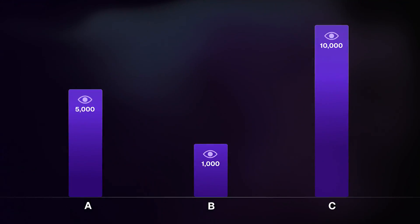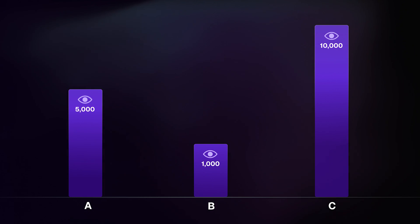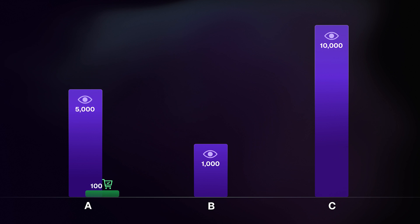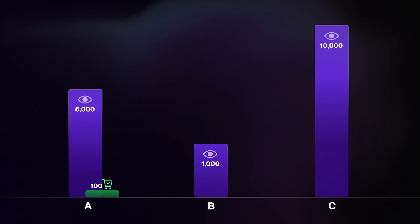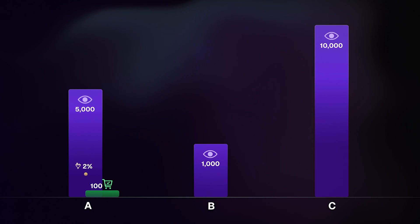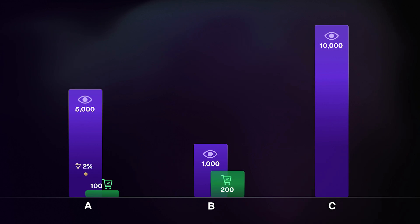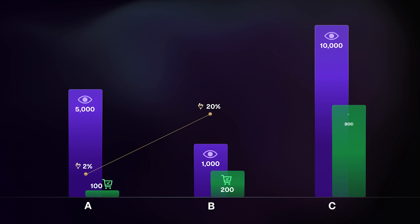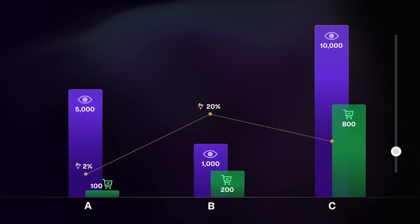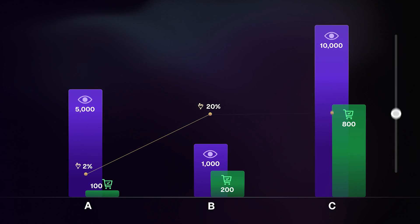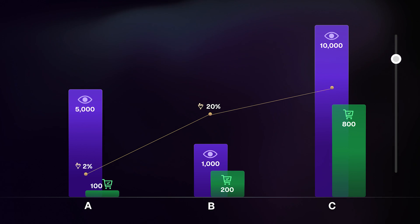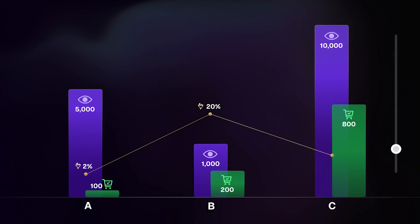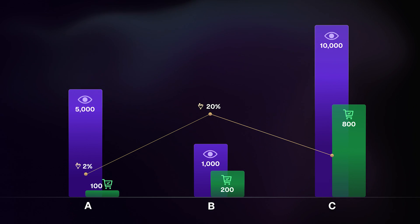For example, out of 5,000 people landing on product A, 100 made a purchase — that's a conversion rate of 2%. Product B received 1,000 visits and 200 people made a purchase — that's a conversion rate of 20%. Product C received 10,000 visits and 800 people made a purchase. I'll give you five seconds to work it out — and if you get it right without a calculator, you have permission to tell your old maths teacher to shut the front door. The answer is 8%.